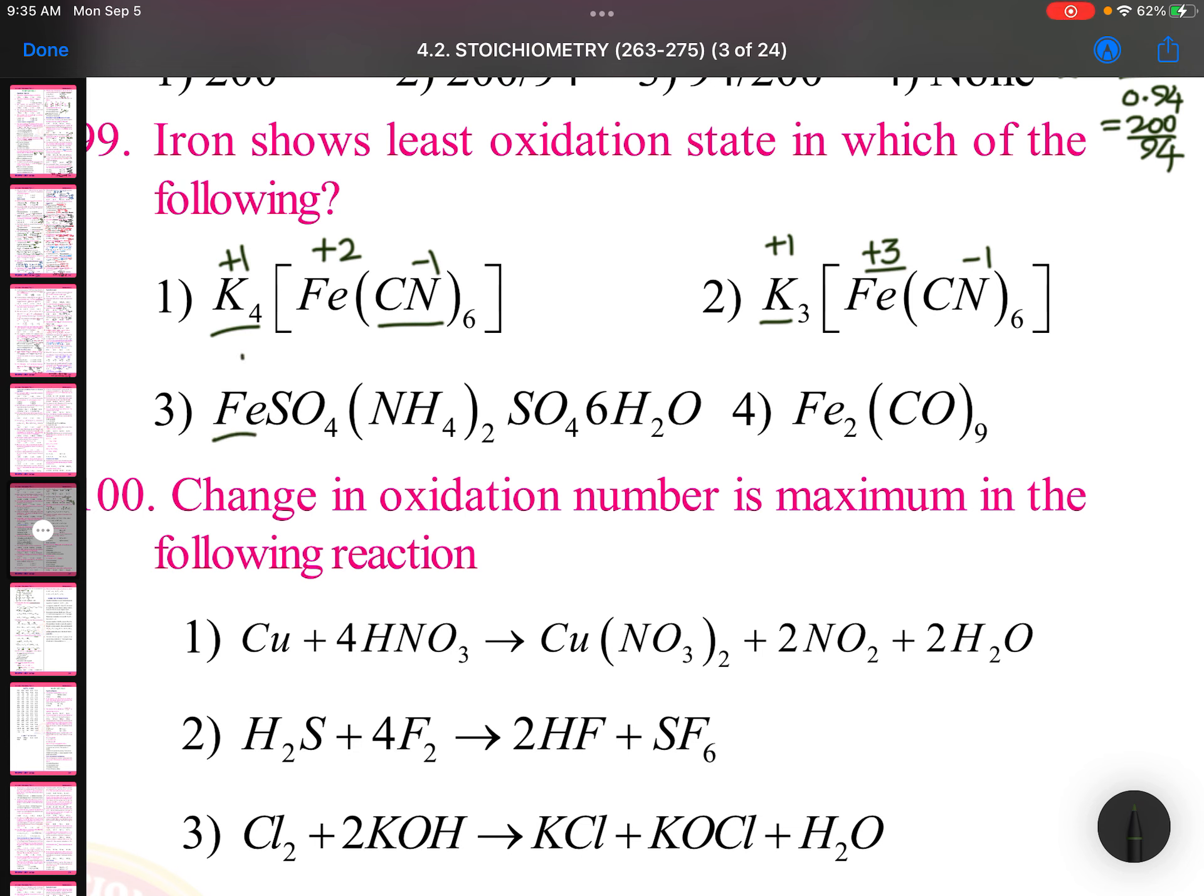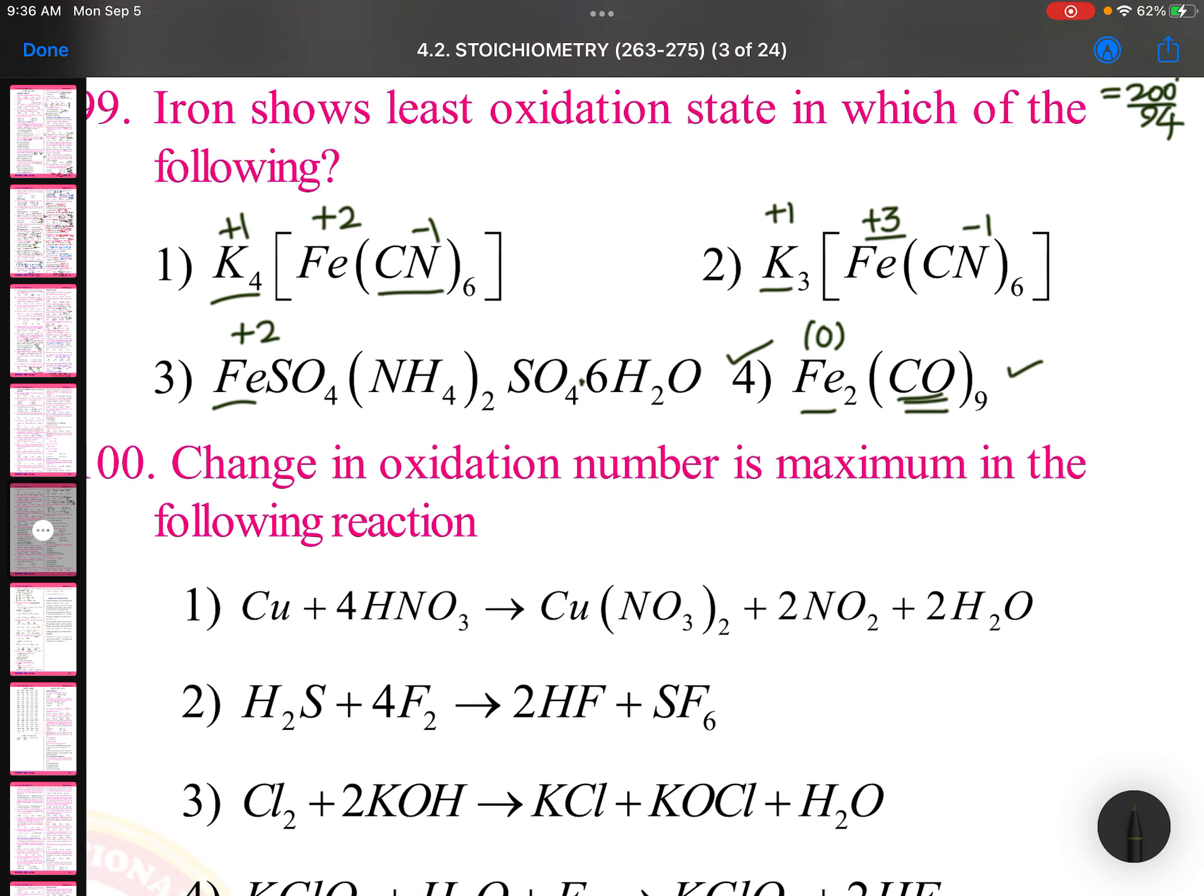FeSO4: iron plus 2. And Fe2(CO)9, it is a complex compound where it is going to show zero oxidation state because carbon monoxide is neutral. So this is your answer. Structure of Fe2(CO)9 is also important. We will discuss in complex compounds.